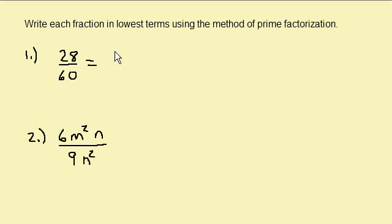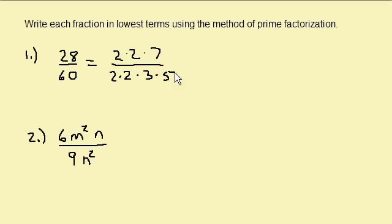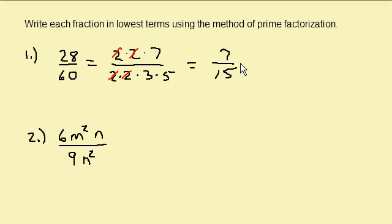The 28 can be written as 2 times 2 times 7, and the 60 can be written as 2 times 2 times 3 times 5. Now we can cancel out this 2 and this 2, and this 2 and this 2. So we're left with 7 over 3 times 5, which is 15. And there's our answer.